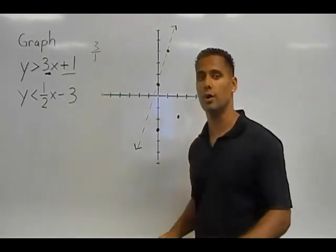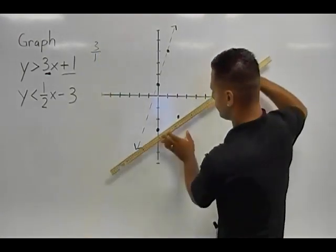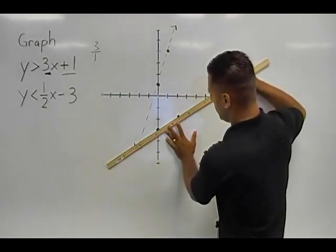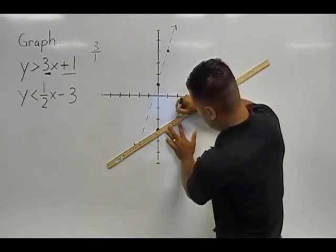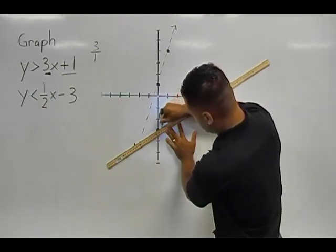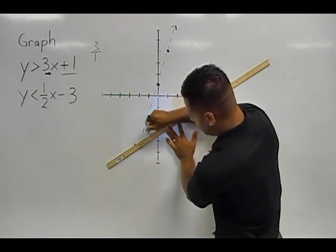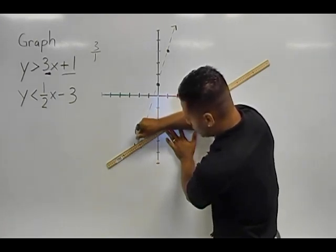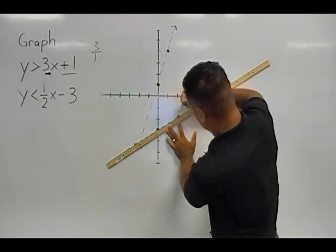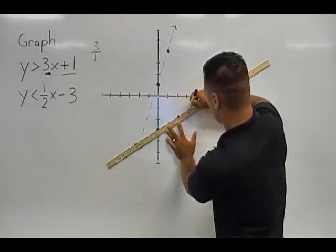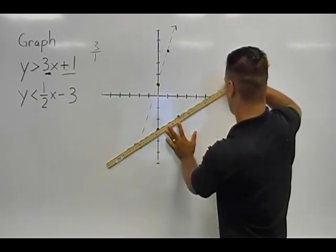And once we have two points of that line, we can take a ruler or a straight edge, connect those two points, and once again we have to make a dotted line. Now if the symbol was greater than or equal to, then we would put a solid line. But because it's a less than symbol, we put a dotted line.